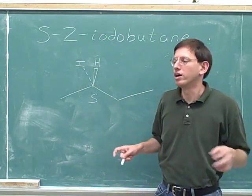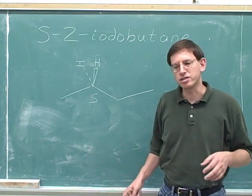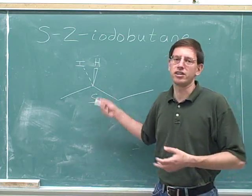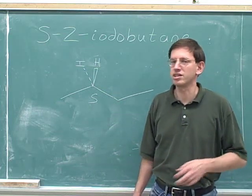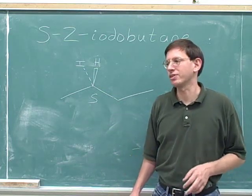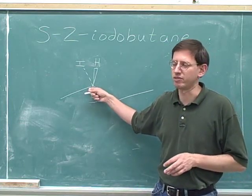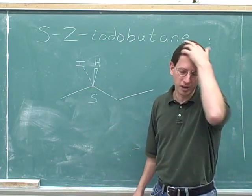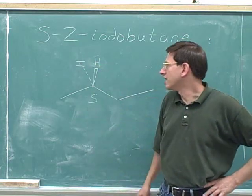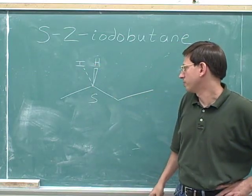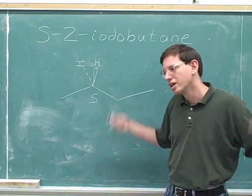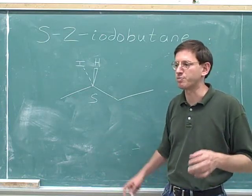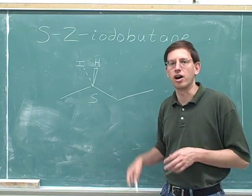How can you tell if you got it right? Whatever your final answer is, use the skills from the earlier videos to test whether you really got an S stereocenter. You can't tell whether your picture is right just by comparing it to what I have on the board, because even if it doesn't match, it could still be correct — there are many different ways to correctly draw an S stereocenter. For example, you could have put the iodine on a different carbon and treated that as the number two carbon. You'll need to do some work on your own to verify your picture.